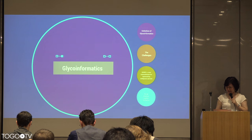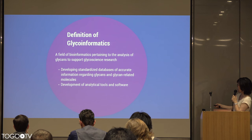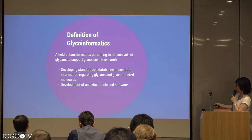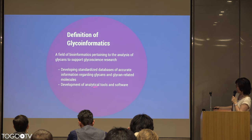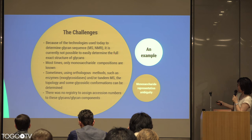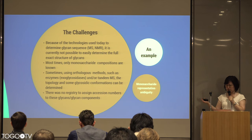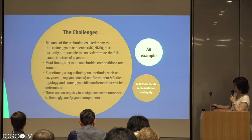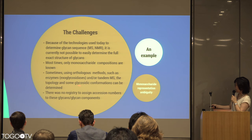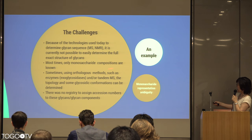Defining glycoinformatics as a field of bioinformatics pertaining to the analysis of glycans for glycoscience research, developing standardized databases of accurate information regarding glycans and glyco-related proteins, and development of analytical tools and software. The challenges, as I mentioned, are that technologies to determine glycan sequences — MS and NMR — are not able to determine the full exact structures of glycans. You might be able to get the monosaccharide composition information, but you don't know the linkage information. Sometimes with orthogonal methods using enzymes or tandem MS you can get some of this information, but it's a long and tedious process. To get really high-throughput information, we usually only get monosaccharide composition.